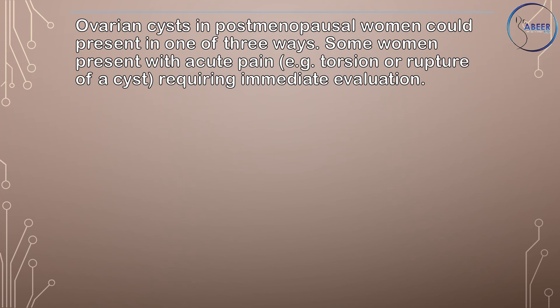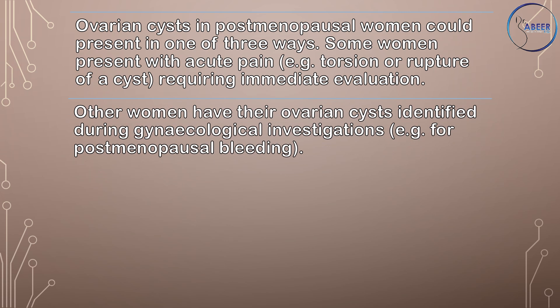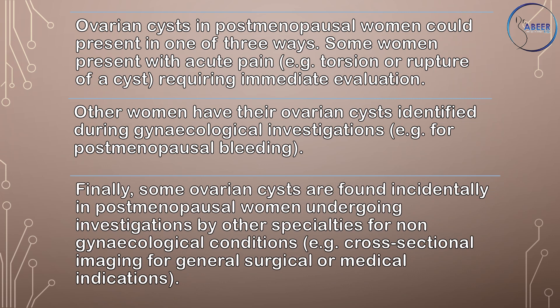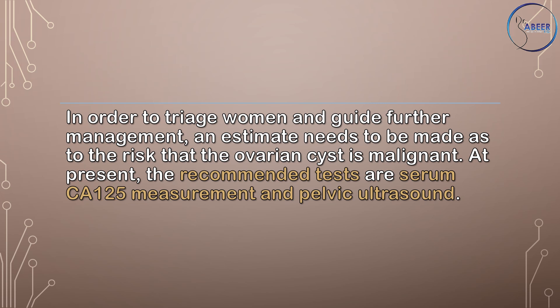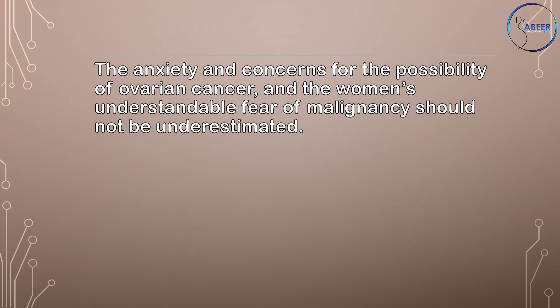Ovarian cysts in postmenopausal women could present in one of three ways: some women present with acute pain, for example torsion or rupture of a cyst, requiring immediate evaluation. Others have their ovarian cysts identified during gynecological investigations, for example for postmenopausal bleeding. Finally, some ovarian cysts are found incidentally in women undergoing investigations for non-gynecological conditions, for example cross-sectional imaging for general surgical or medical indications. In order to triage women and guide further management, an estimate needs to be made as to the risk that the ovarian cyst is malignant. The recommended tests are serum CA-125 measurement and pelvic ultrasound.